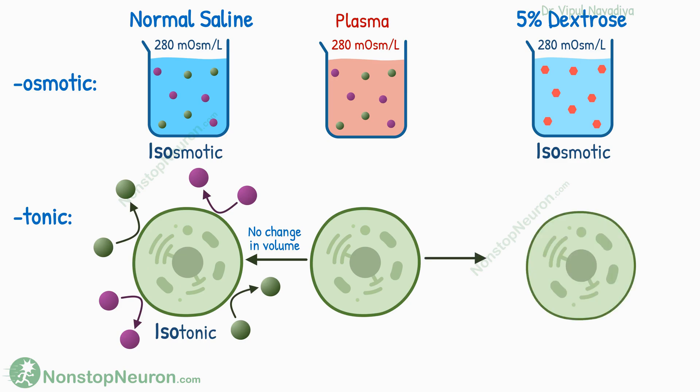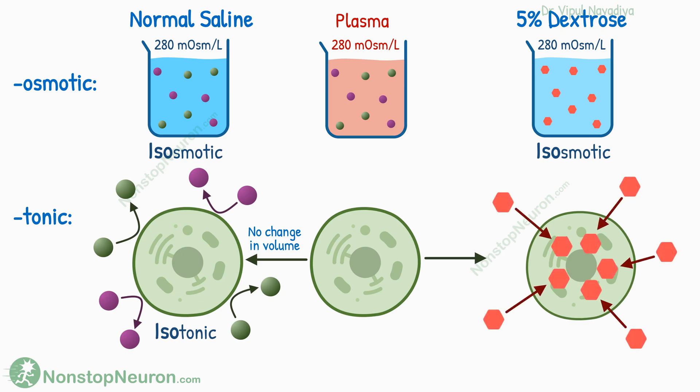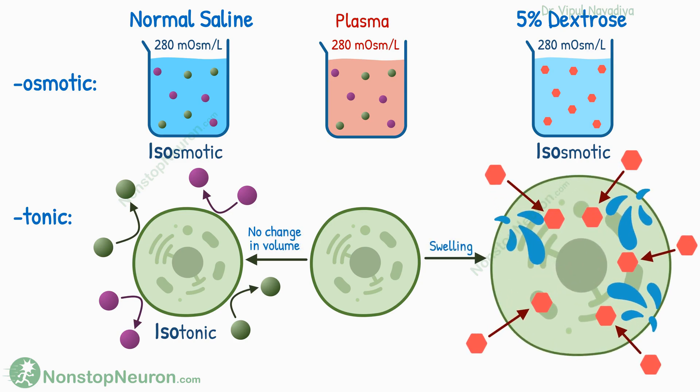But the story of 5% dextrose is different. The cell membrane is permeable to glucose, so if you put a cell in that solution, the glucose enters the cell. This entry causes water to follow by osmosis, so the cell volume increases.